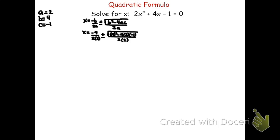We're going to go ahead and simplify. In the first fraction, negative 4 over 2 times 2 gives x equals negative 4 over 4. For the second fraction, we work out the radical: 4 squared is 16, then negative 4 times 2 is negative 8, and negative 8 times negative 1 is positive 8. So we get the square root of 16 plus 8, all over 2 times 2, which is 4. Working it out further, negative 4 divided by 4 is negative 1, plus or minus the square root of 24, over 4.